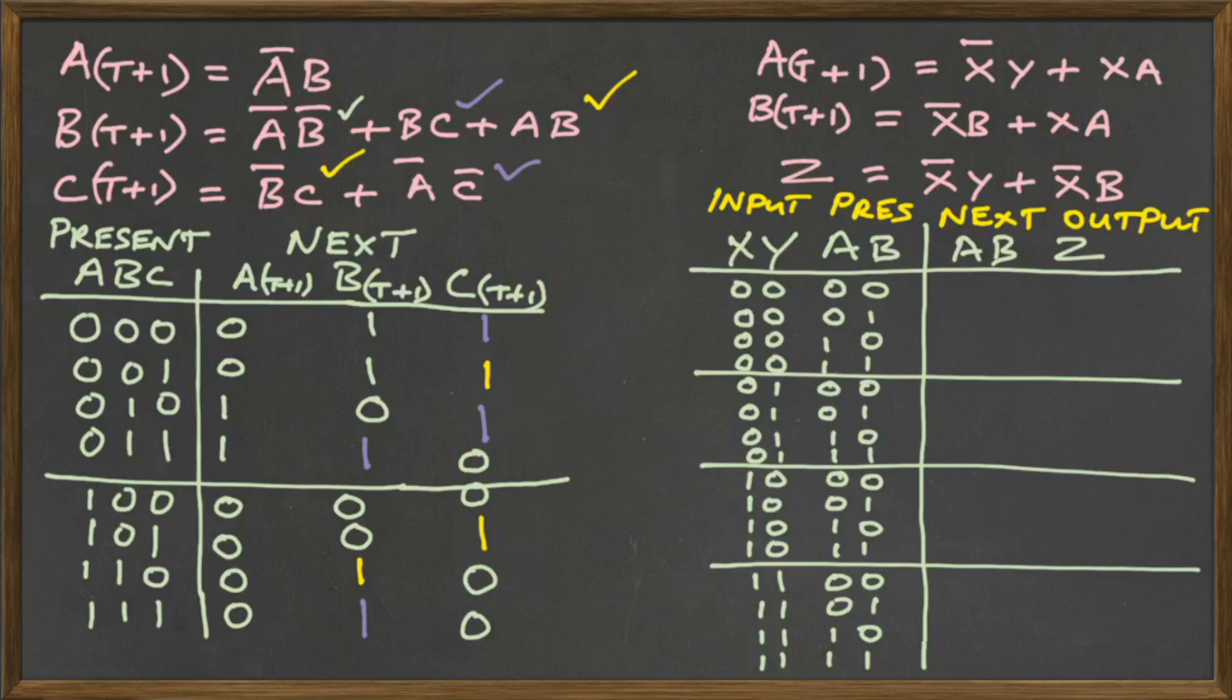So we notice that XA is a term of both the A(t+1) and the B(t+1). So wherever X and A are both one in the table, we are going to put a one, which gives us those ones shown there. We then move to the X bar Y, which is going to put the ones for the A(t+1) as shown. And the X bar B, which is going to put those four ones for the B(t+1) as shown.